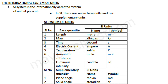For the SI units: length is meter, mass is kilogram, time is second. Electric current is Ampere, represented by A. Temperature is Kelvin, represented by K. Amount of Substance is mole (MOL), and Luminous Intensity is candela, represented by CD.